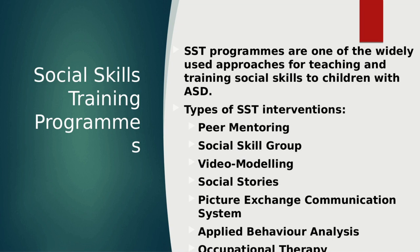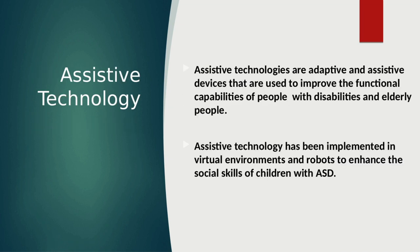Although social skills training programs are effective, they are not available for all children with ASD. A wide range of studies have investigated the potential of assistive technology in enhancing and training the social skills of children with ASD. Assistive technologies are adaptive and assistive devices used to improve the functional capabilities of people with disability and elderly people. Children with ASD cope well with rule-based and predictable systems, so assistive technology became a promising solution for training children with ASD. Assistive technology has been implemented in virtual environments and robots to enhance the social skills of children with ASD.